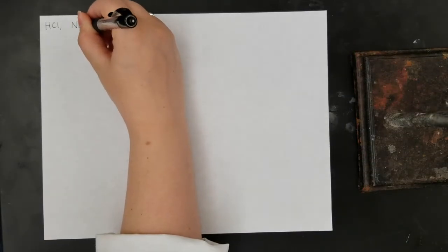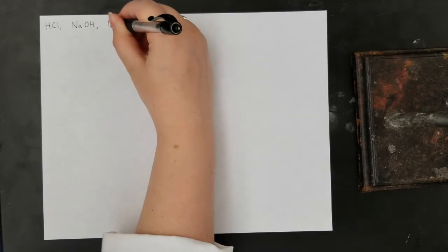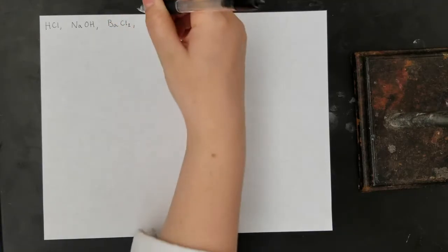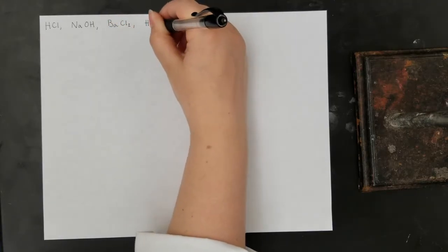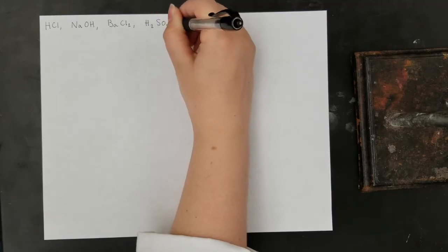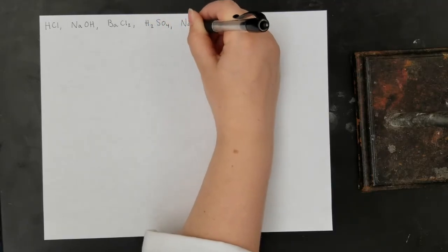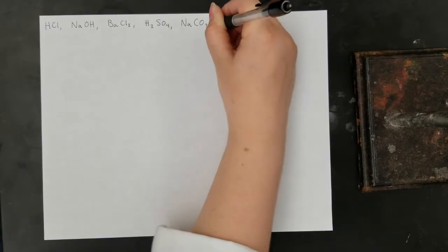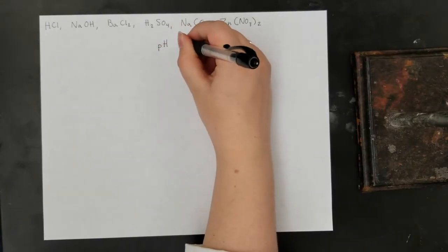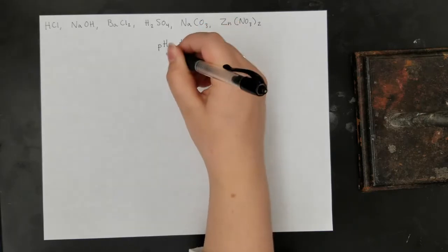Suppose that we had to identify the following 6 clear, colorless solutions: hydrochloric acid, sodium hydroxide, barium chloride, sulfuric acid, sodium carbonate, and zinc nitrate. To guide us in our efforts to identify our 6 solutions, we'll create a flow chart to aid us in the procedure.